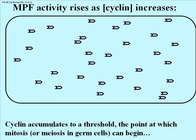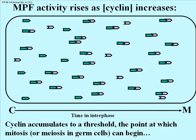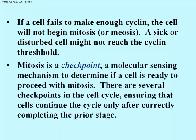Here's how cyclin acts to regulate MPF kinase activity. Cyclin levels rise from low levels just after cytokinesis, accumulating and binding to CDK subunits, eventually reaching a threshold concentration as the next mitosis approaches. Only after reaching this threshold can mitosis begin. If a cell is disturbed or receives conflicting chemical signals from outside the cell, it might not produce enough cyclin, thereby delaying mitosis until the cell is ready. Regulation of progress through the cell cycle occurs at several such molecular checkpoints, each controlling activity ensuring the correct completion of a prior stage of the cycle.